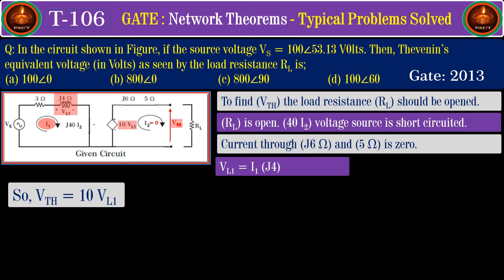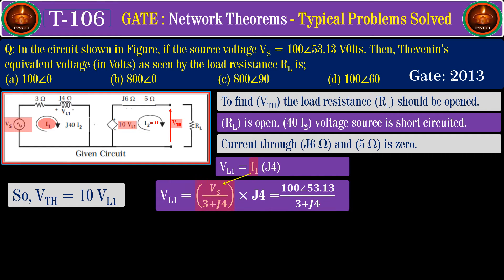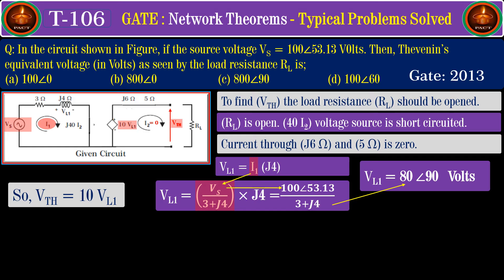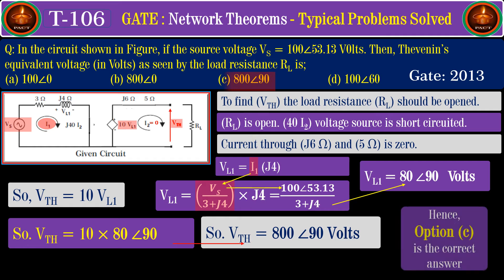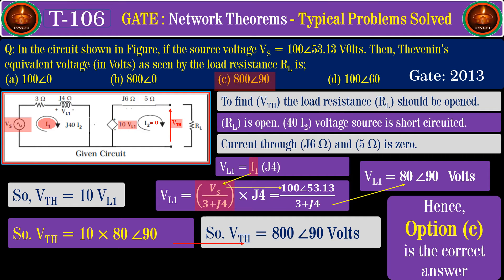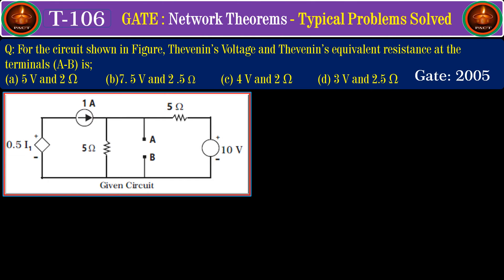The Thevenin's voltage is equivalent to 10 times VL1. VL1 is the voltage across the inductance: VL1 equals I1 times j4, and I1 equals VS divided by (3 plus j4). Solving, we get VL1 equals 80 angle 90 volts. Therefore, VThevenin equals 10 times 80 angle 90, which gives 800 angle 90 volts, and hence option C is the correct answer.